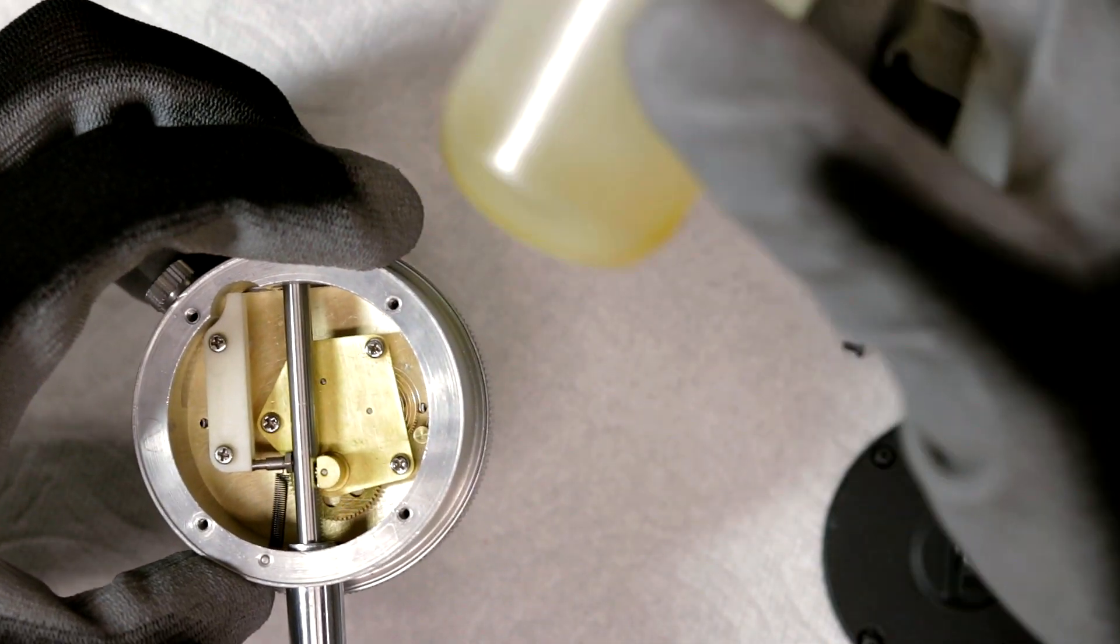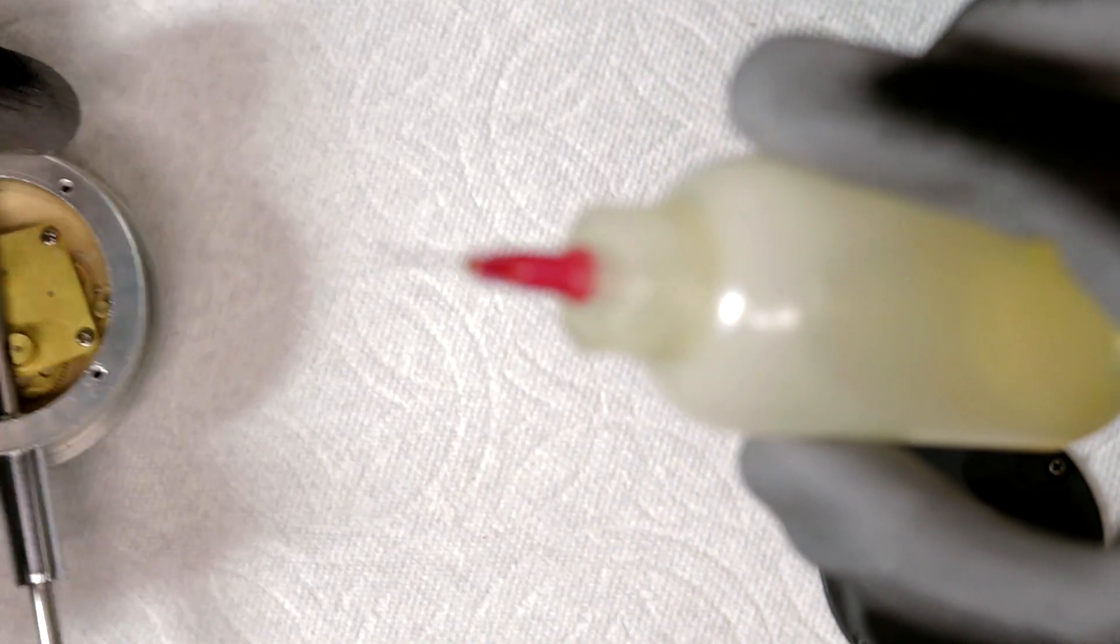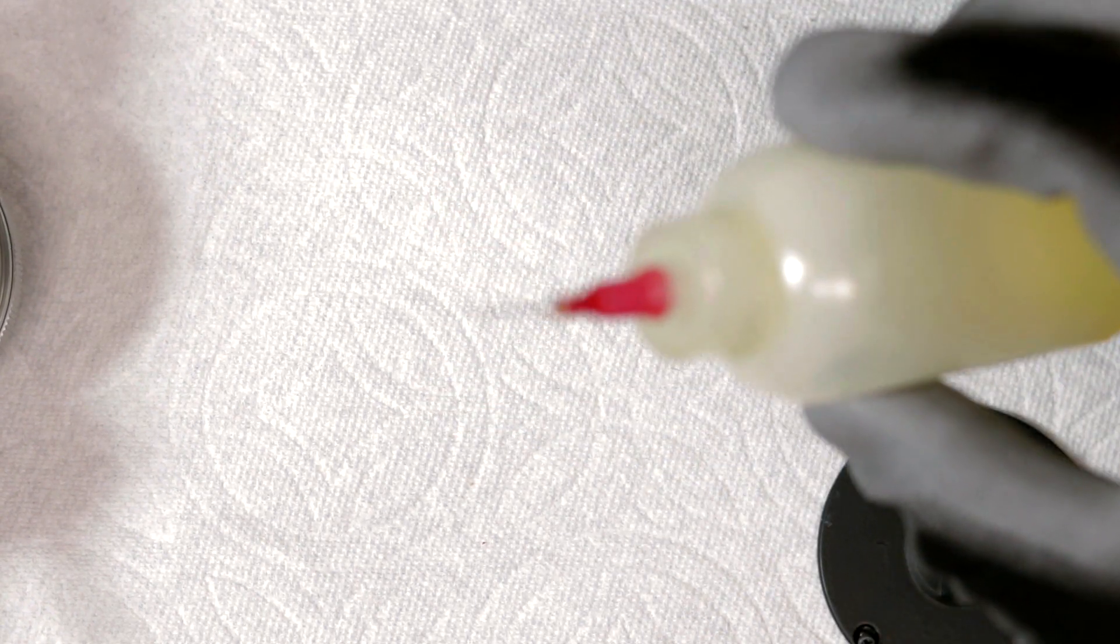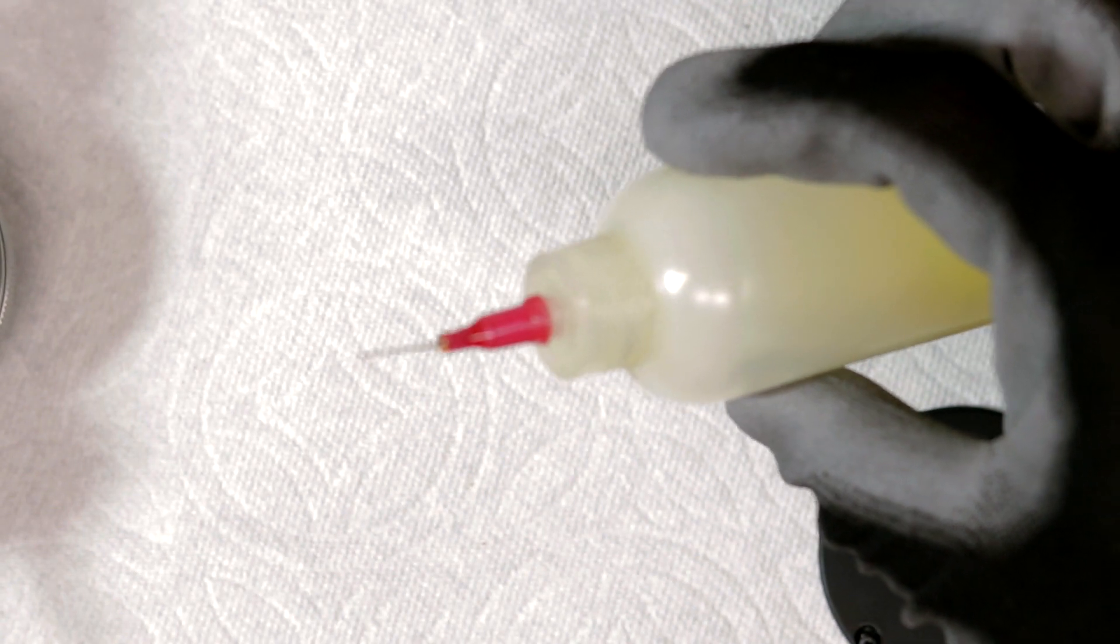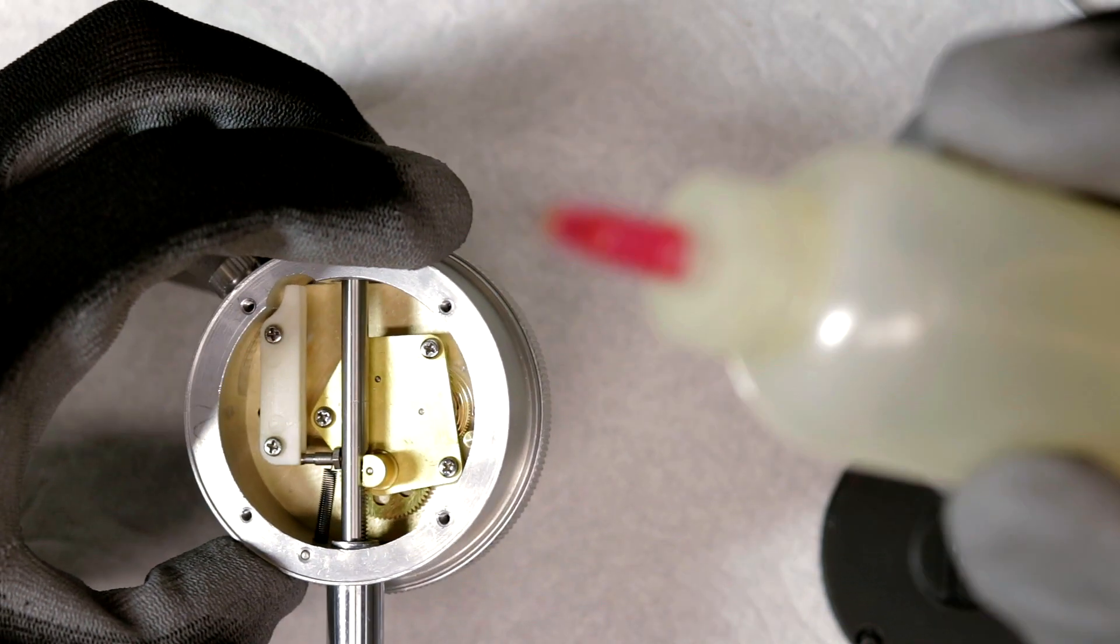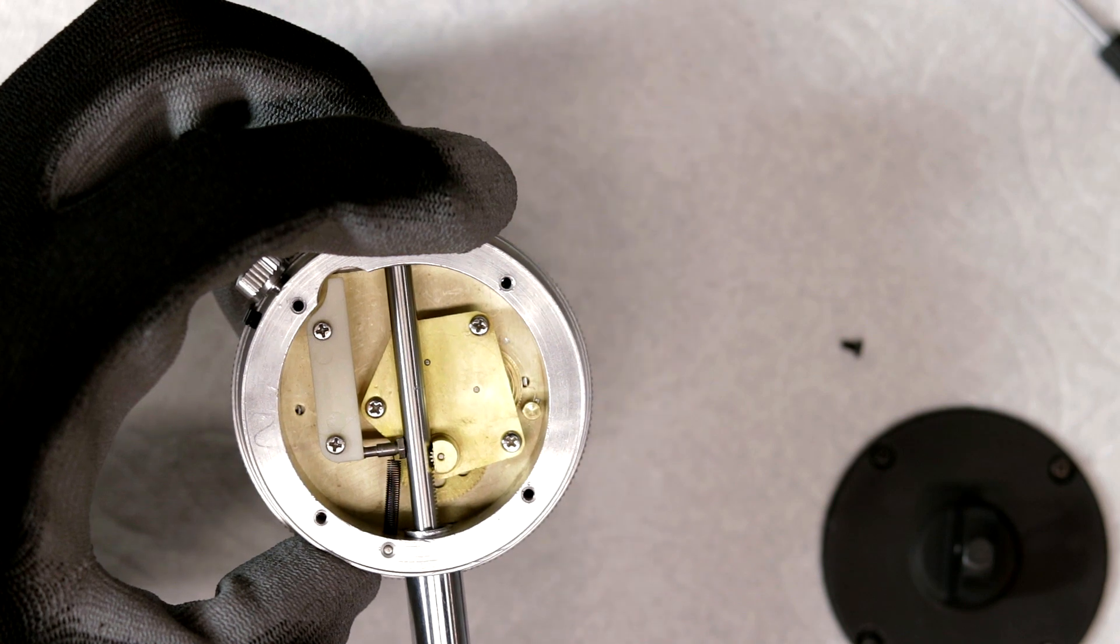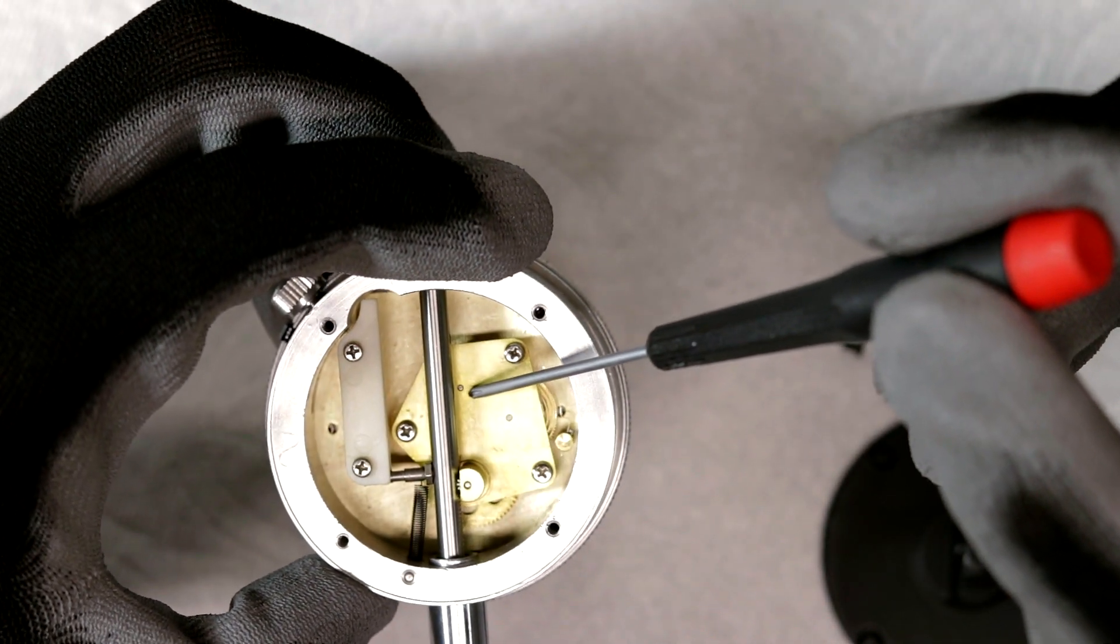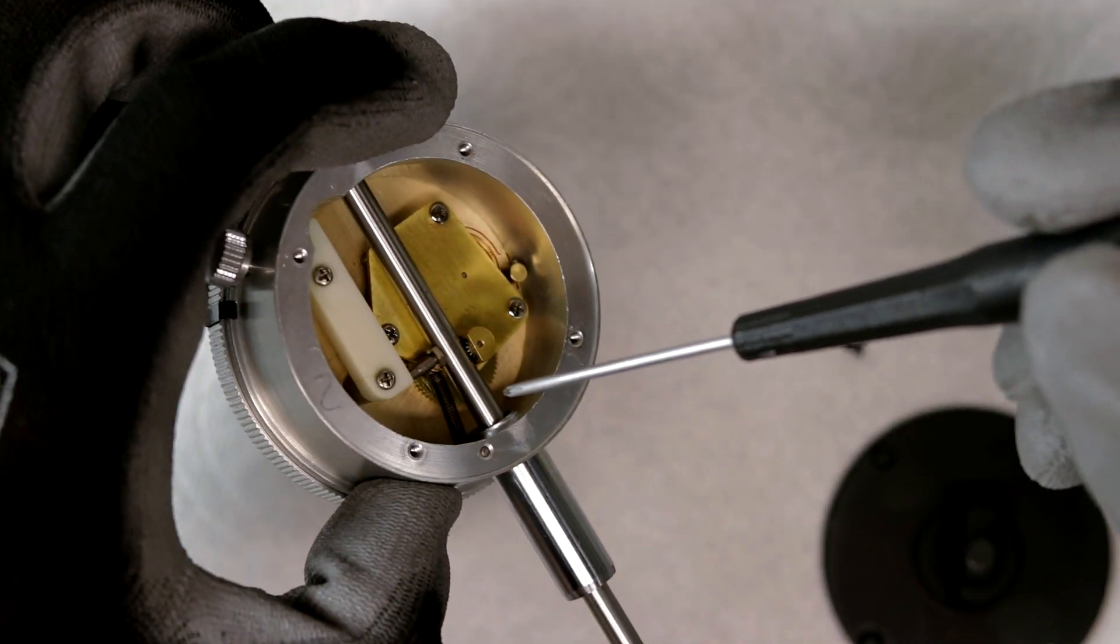And so what I ended up doing was, I got some machine oil, and I used a 26 gauge needle. I don't know if it's gonna focus here, but I ended up using a 26 gauge needle, and I just located the gears, where the gearing is. So there's a gear here, here, and then you kind of have a main gear here.